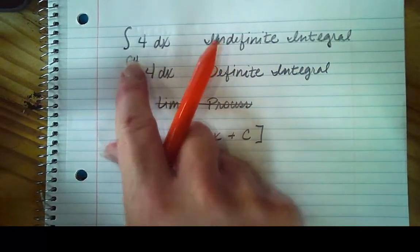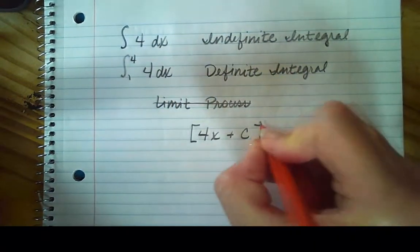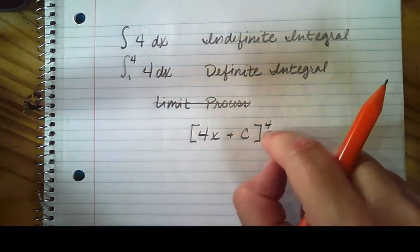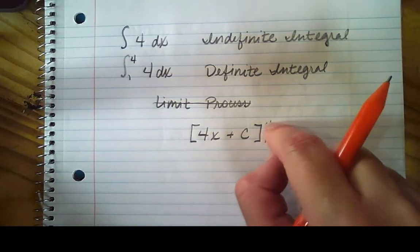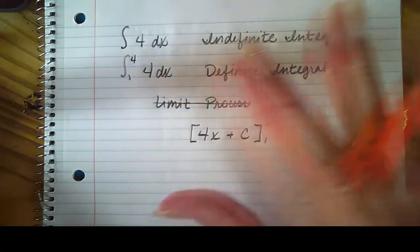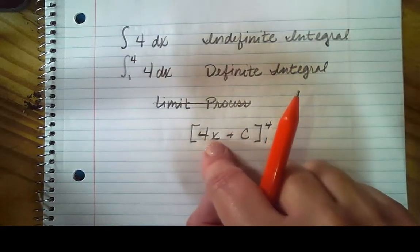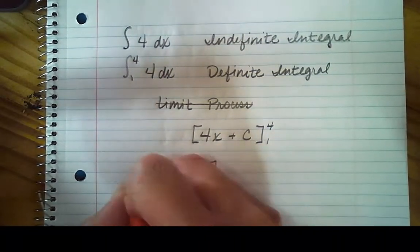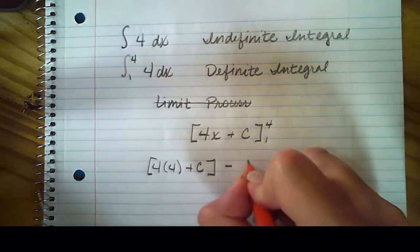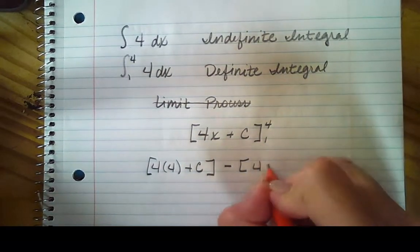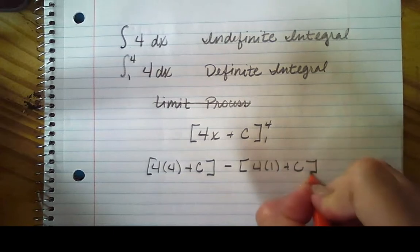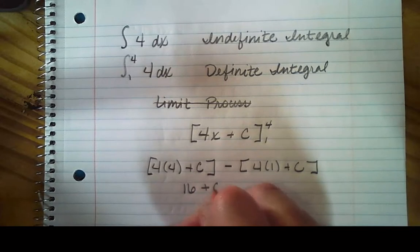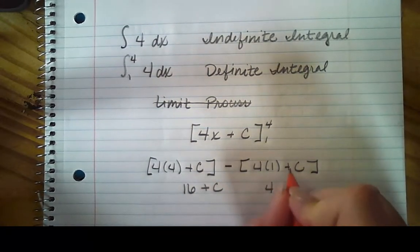So my two numbers were 1 and 4. So I'm going to integrate from 1 to 4. And you always go from top minus bottom. So I'm going to evaluate with 4, and I'm going to evaluate with 1 and subtract my two answers. So 4 times 4, plus c. So I evaluated at 4, minus 4 times 1, plus c. And now just do the math. So 16, plus c, and then this gives me 4, plus c.